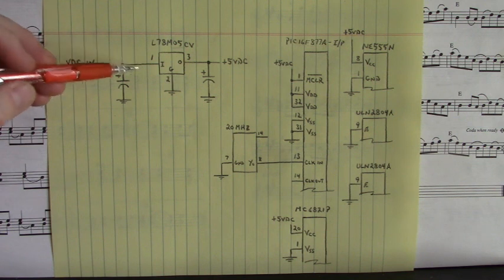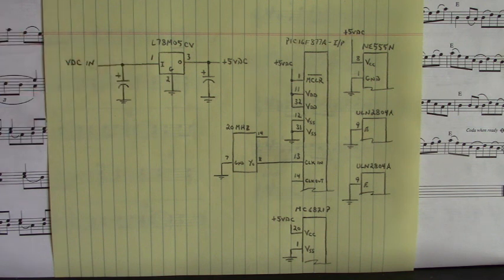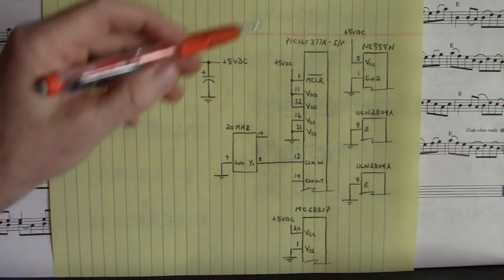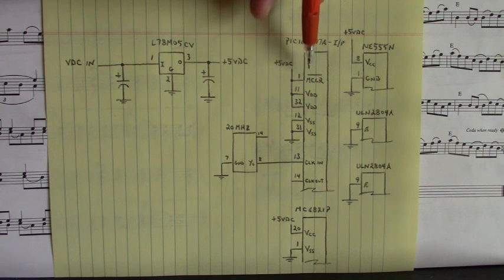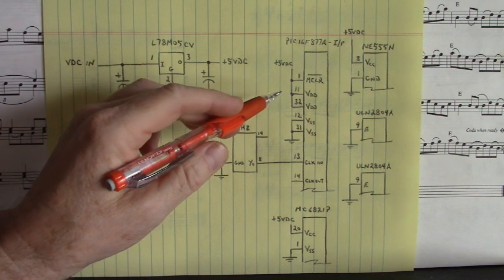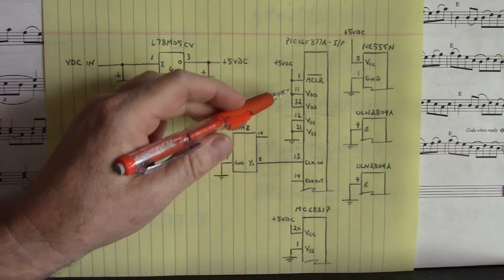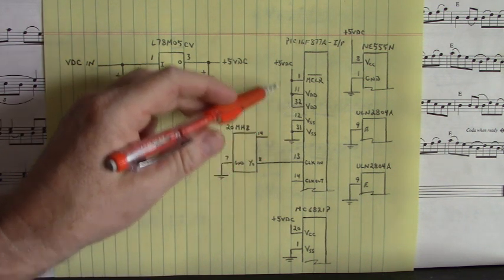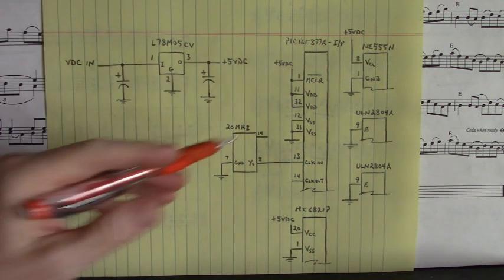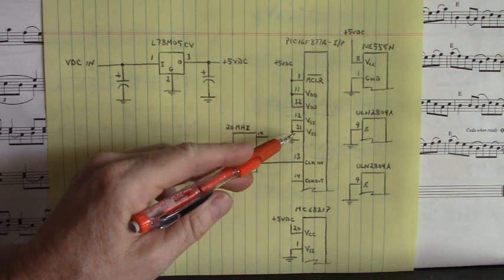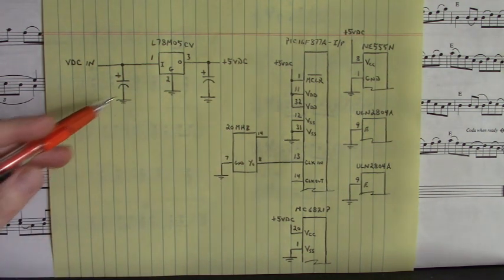Over here, let's start here with the PIC16F877A, its voltage requirements. Here's the master clear pin on pin 1, I tie that up to 5 volts. There's two VDD pins and two VSS pins. Pins 11 and 32 for VDD, that gets tied up to 5 volts DC, this 5 volts DC right here. The VSS pins, 12 and 31, get tied to power supply ground.